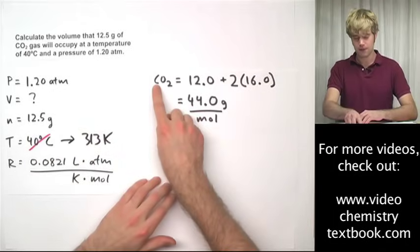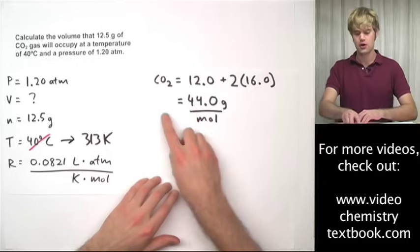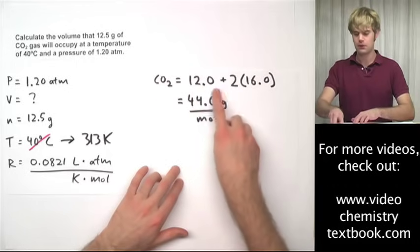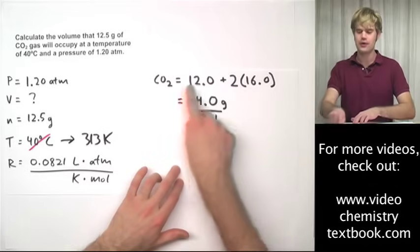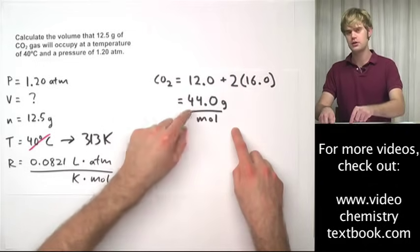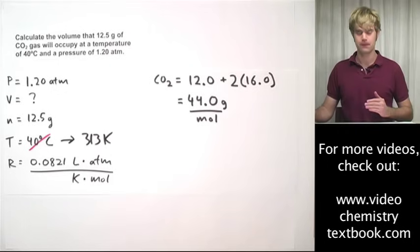So the first thing we have to do is determine the molar mass of carbon dioxide. Well, it has one carbon and two oxygens. So we take the mass of carbon plus two times the mass of oxygen, add these together and it gives us 44.0 grams for each mole.